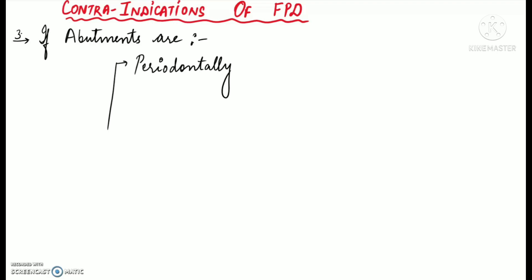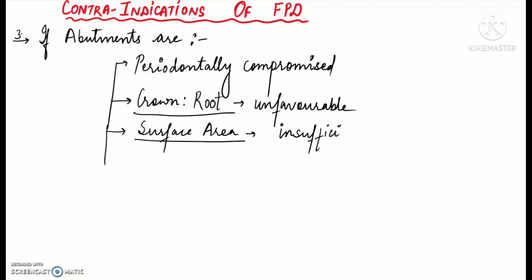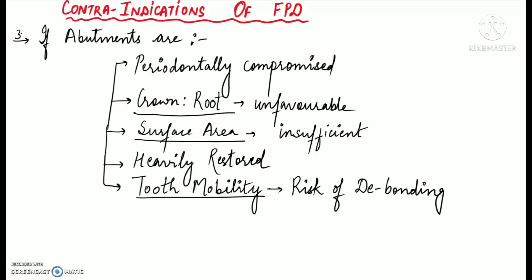A fixed partial denture is generally contraindicated if the abutments are periodontally compromised — that means if the abutments are not healthy and not capable of providing support to the prosthesis. The abutments might have an unfavorable crown-to-root ratio, insufficient surface area, or be heavily restored. Mobile teeth are not good candidates as abutments for FPD because tooth mobility increases the risk of de-bonding.